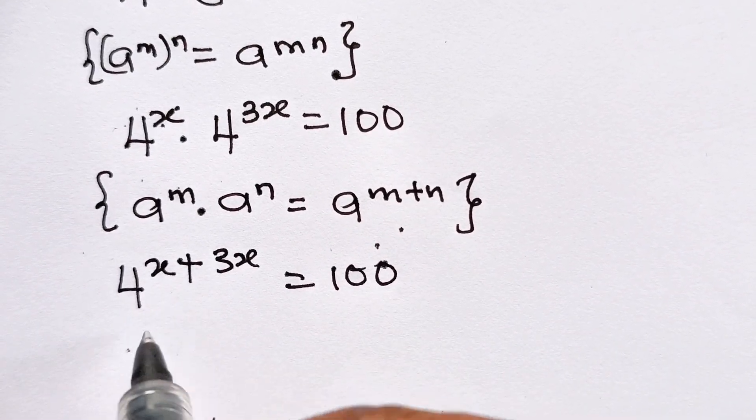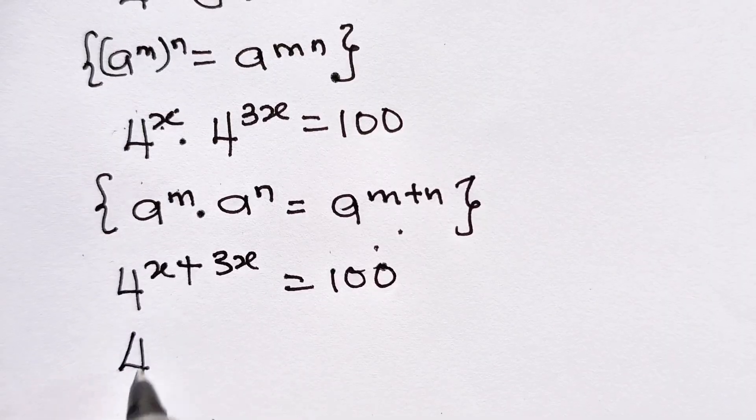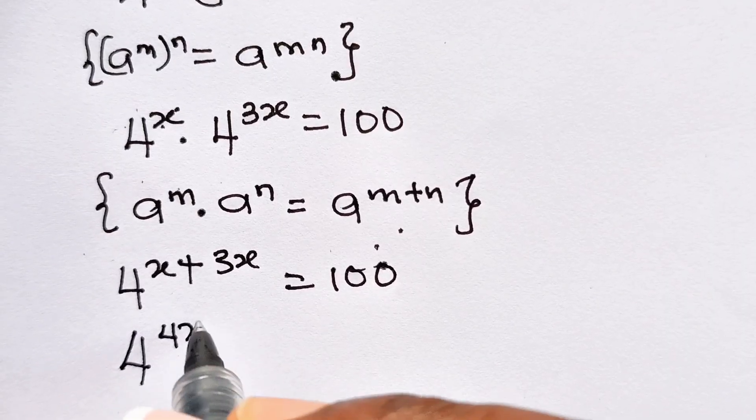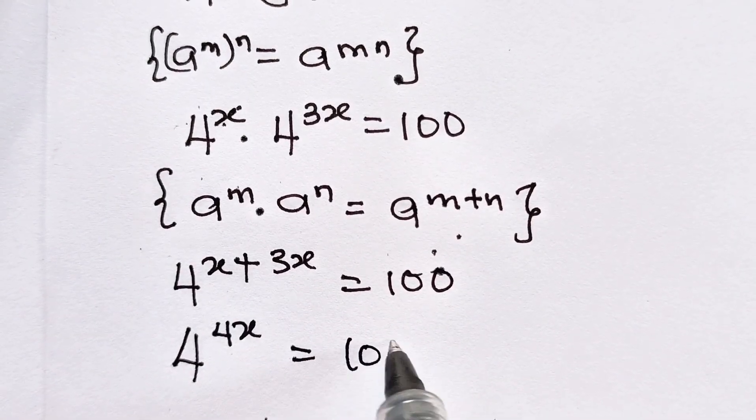Moving forward, we have 4 to the power of 4x is equal to 100.